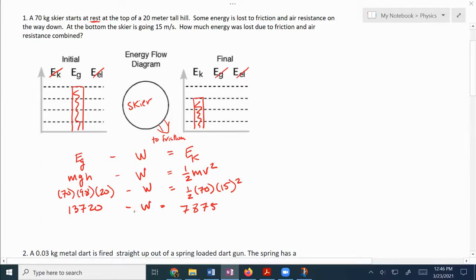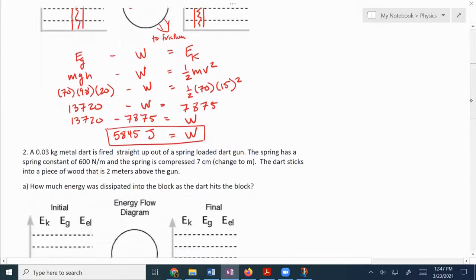So now to solve for w, basically what I would do is I'd add the w to the other side, and then I would subtract the 7,875 over to this side and add the w to that side. And that's going to give us 5,845 joules is equal to w. And that's how much energy we've lost. So cool, let's move on to number two.